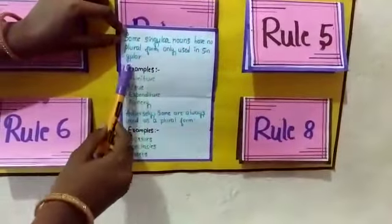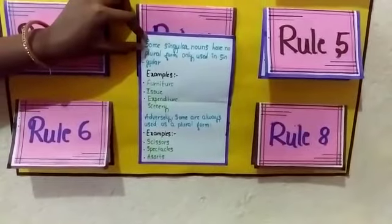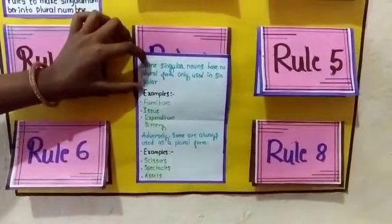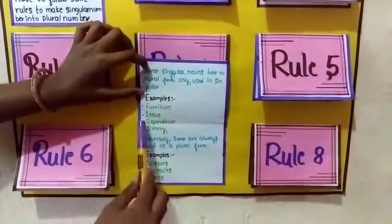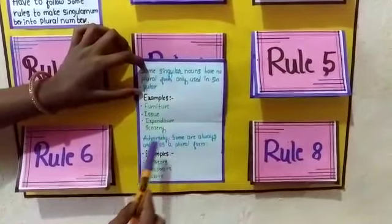Seventh rule: some singular nouns have no plural form, used in singular. Examples: furniture, issue, expenditure, scenery.